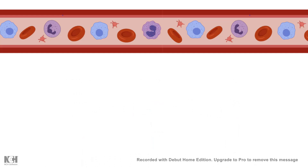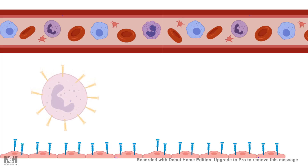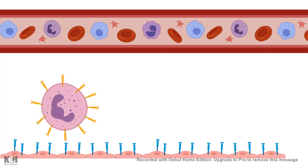The blood cells, especially the WBCs, which need to go out when the body is challenged with any kind of attack, need to roll slowly. And in order to roll slowly, they need to interact with the endothelial cells, the blood vessel cells. The way it does this is by P-selectin and integrin interaction. P-selectin is heavily glycosylated, and this heavy glycosylation helps the neutrophil to slow down and squeeze itself out from the blood vessel to reach the tissue space where the attack has taken place.